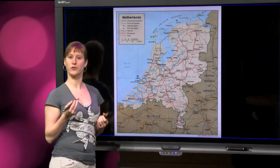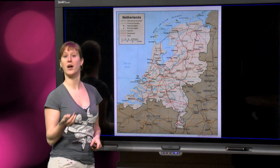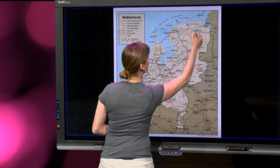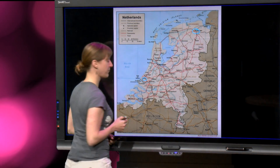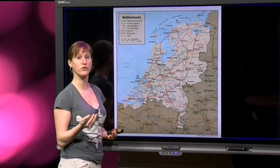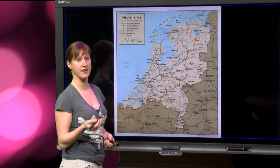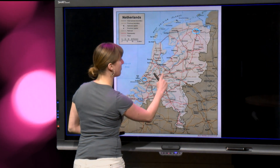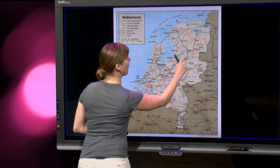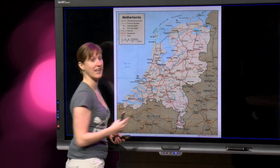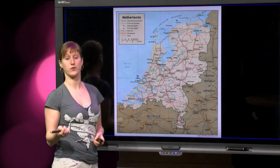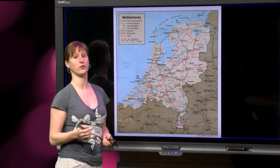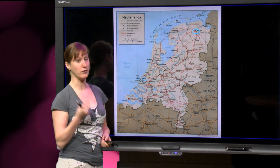Suppose I want to take the train from Delft to Groningen — that's here. There is no direct train, and we can see this on the map, because the trains are the black lines on the map, and there is no direct train from Delft to Groningen. So how am I going to make this travel?